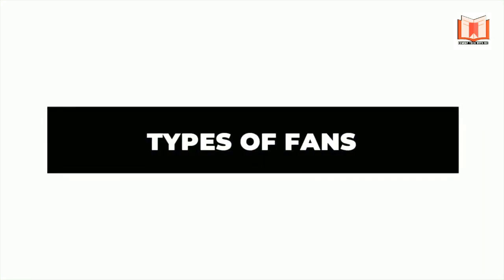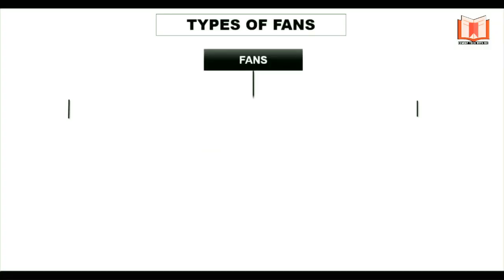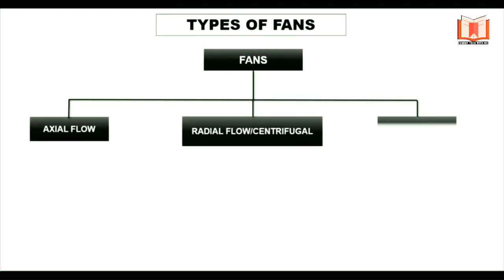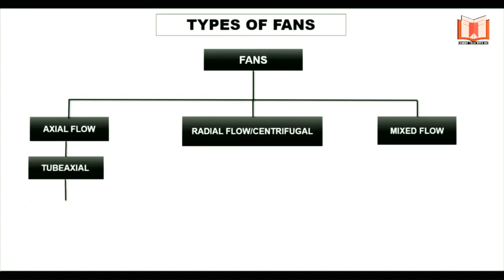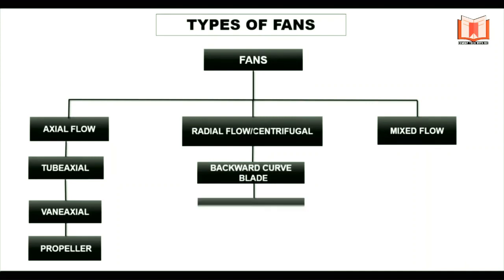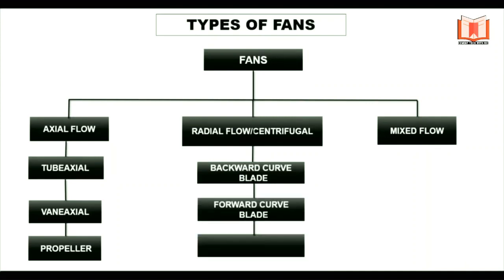Types of Fans: There are three types of fans — axial flow fan, centrifugal or radial flow fan, and mixed flow fan. Axial flow fan subtypes include tube axial, vane axial, and propeller. Centrifugal fan subtypes include backward-curve blade, forward-curve blade, and radial tip blade.